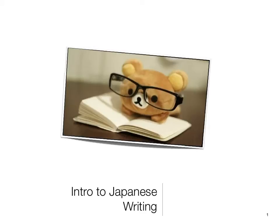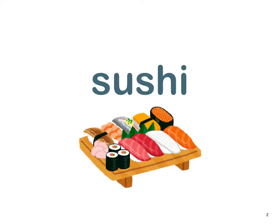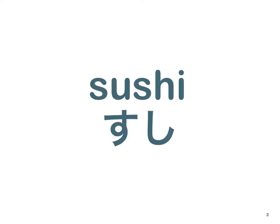Hello and welcome to Introduction to Japanese Writing. Our first step here is to take a look at the different types of writing systems used in modern Japanese. We begin our examination by looking at a word that most of you probably already know: sushi. I've put the English and Japanese spellings together here so you can compare the two. They're pronounced identically — sushi in English and sushi in Japanese.